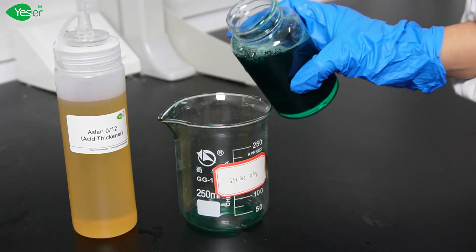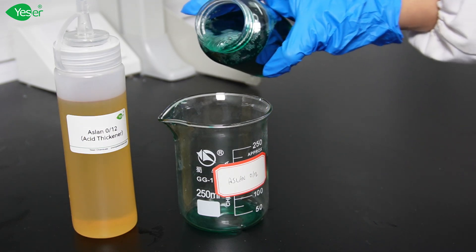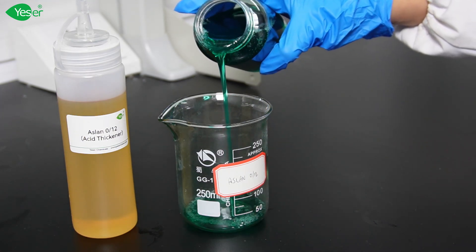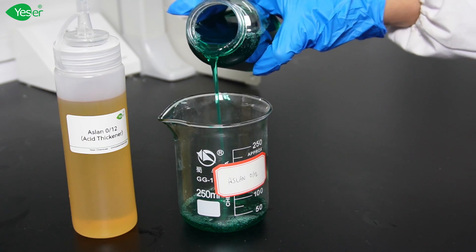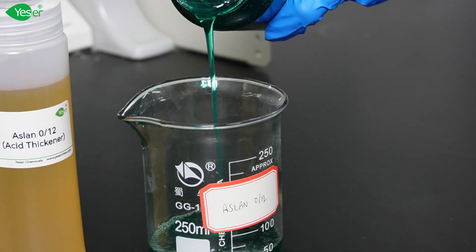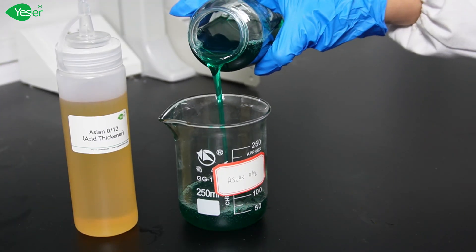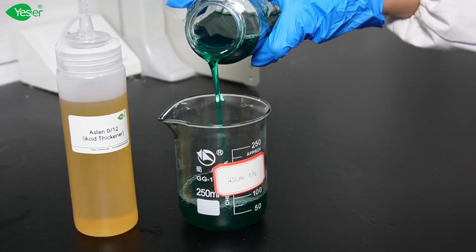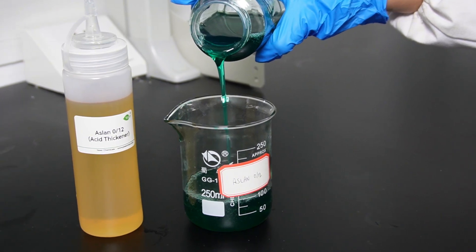In conclusion, Aslan 012 is the ultimate thickener for acidic toilet cleaner formulations. It's stable at low pH, provides excellent wall-hanging properties, and delivers a smooth, consistent texture. It outperforms xanthan gum, HPMC, and salt.